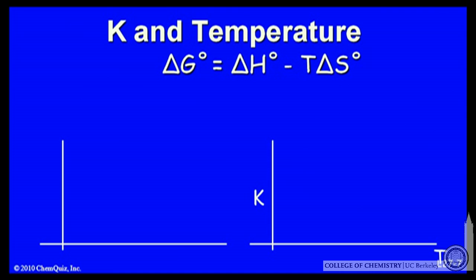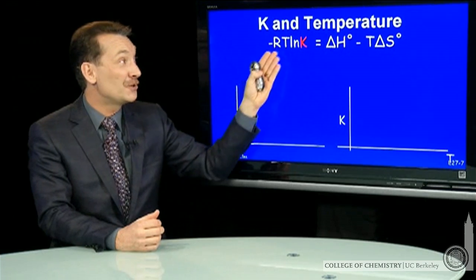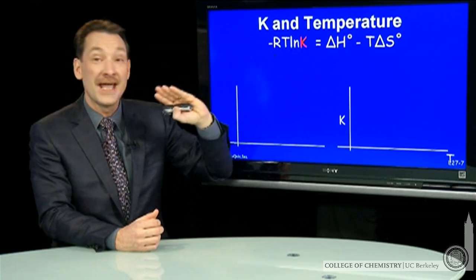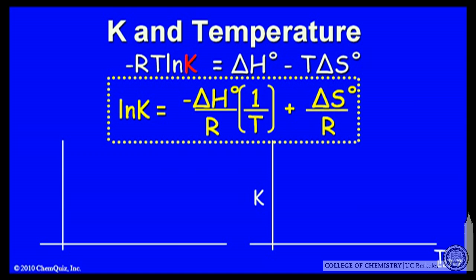Now we have a relationship between the standard state free energy and the equilibrium constant K. ΔG equals negative RT ln K. So I have a relationship between natural log K, the equilibrium constant, and temperature. If I divide this through by negative RT, I have ln K equals negative ΔH over R times 1 over T plus ΔS over R.